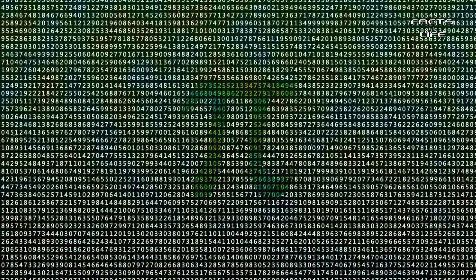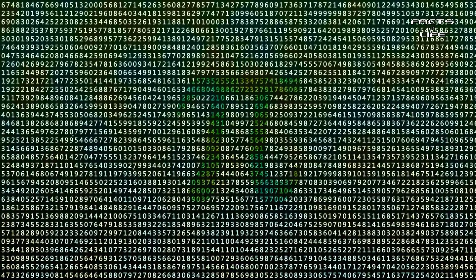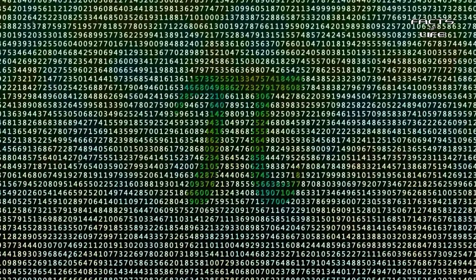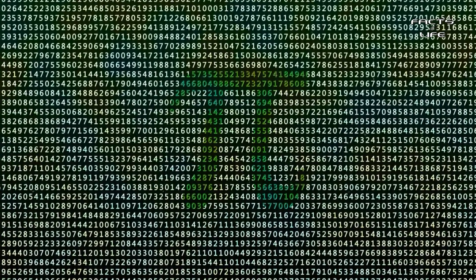The most well-known fact about Pi, normally rounded to 3.14159, is that it represents the ratio of the circumference of a circle to its diameter. Pi is also an irrational number.